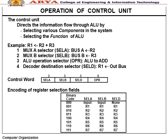There is a control word with encoding of register selection fields. The different inputs include selection register A, selection register B, and selection register D.